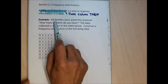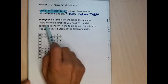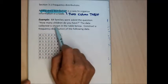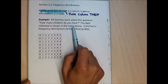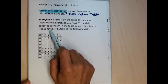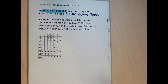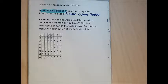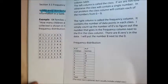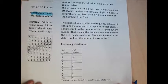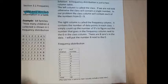64 families were asked the question: how many children do you have? The data collected is shown in the table below. Construct a frequency distribution of the following data. Each one of these numbers represents the number of children a family had. A frequency distribution is just a two-column table that organizes the data.